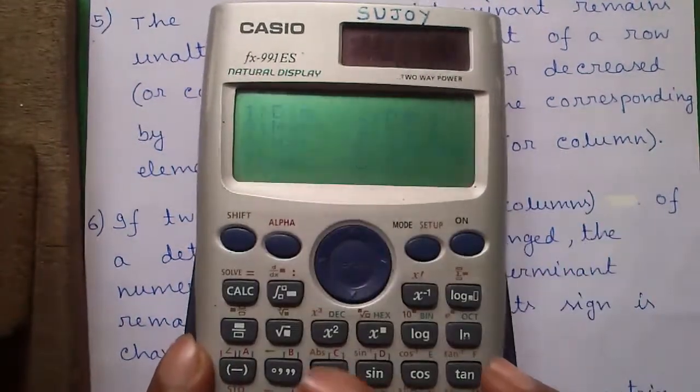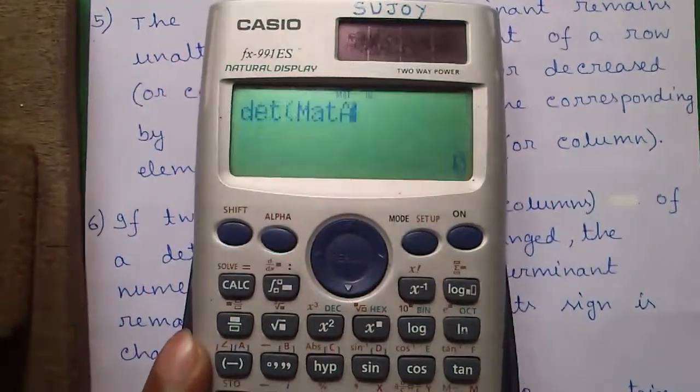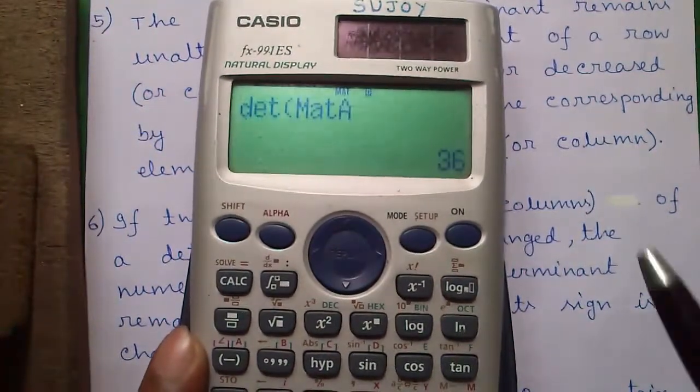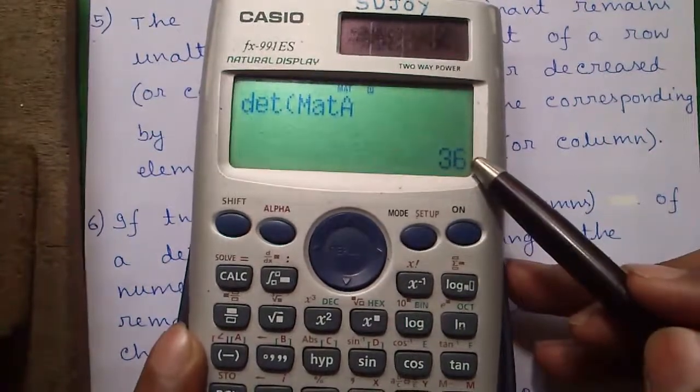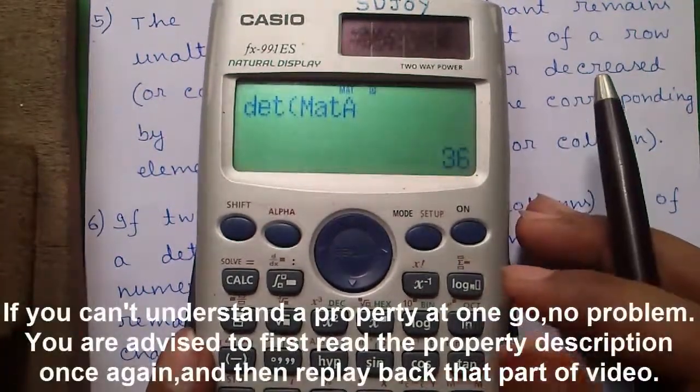So we have got our new matrix with 0, minus 4 and minus 8 in row 1. So it should give us the same determinant value as it was in matrix A. Let's try it. So the determinant was 36 and now it's also 36. So this property is verified.